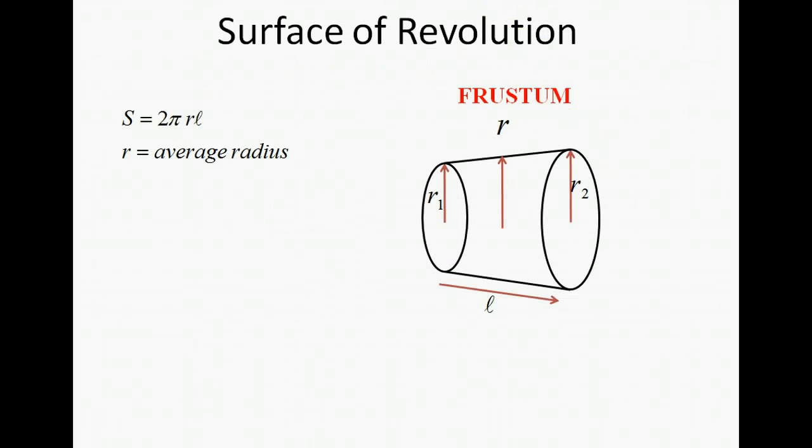We're going to start by using a frustum and the surface area of a frustum can be found by using the formula 2πrℓ where ℓ is a slant height of the frustum and r is the average of the two radiuses at the ends of the frustum.